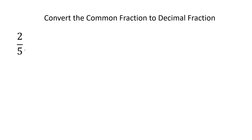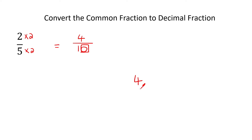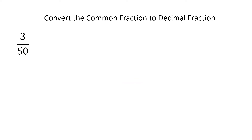Here's another one: 2 over 5. So we multiply the bottom by 2, and the top by the same, so you get 4 over 10. Take the number 4 — the decimal's at the back always — and then move it by however many zeros you have. There's only one, so you move it one place. And so you end up with 0.4 — just put a 0 in the front.